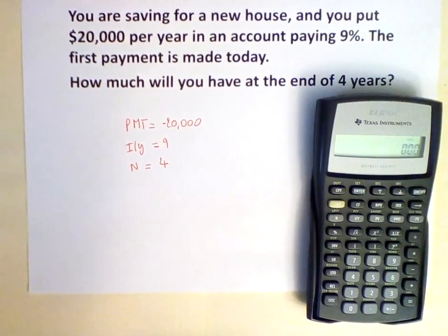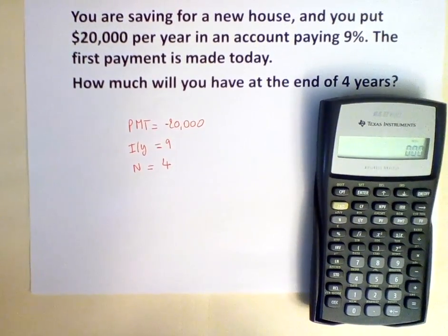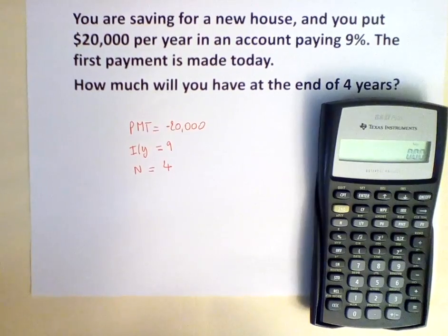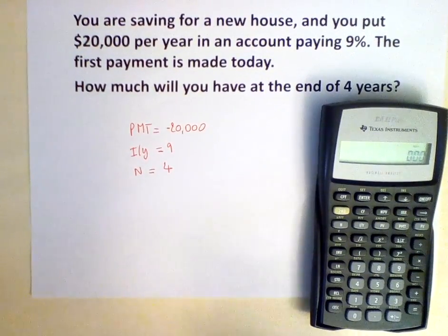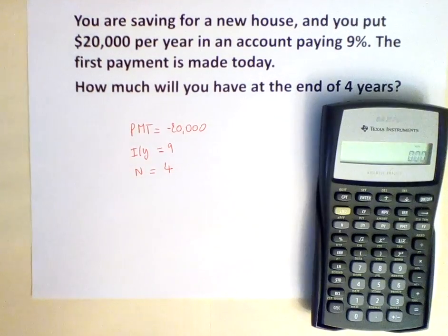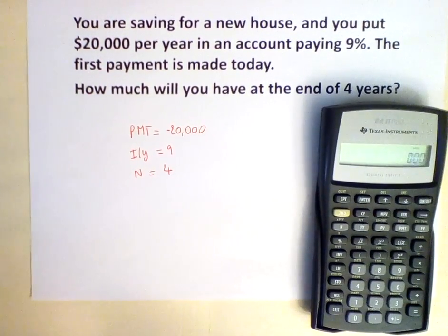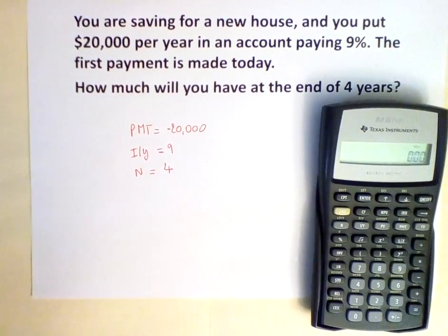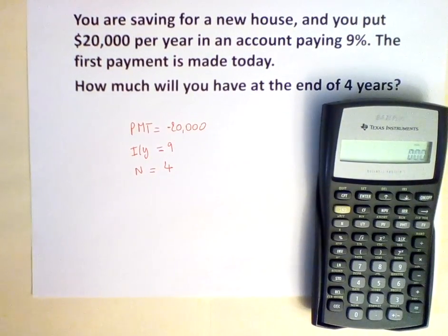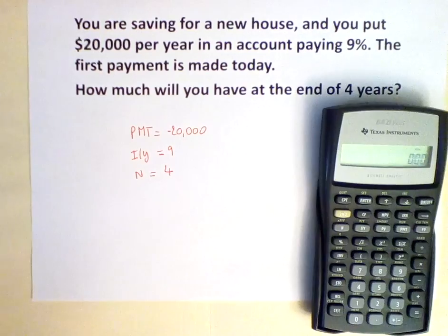Once you clear your work, you'll see that there is a BGN on top of the numbers that show up on the calculator, and that means the calculator is set to begin mode. Once that is done, we are ready to input our information.